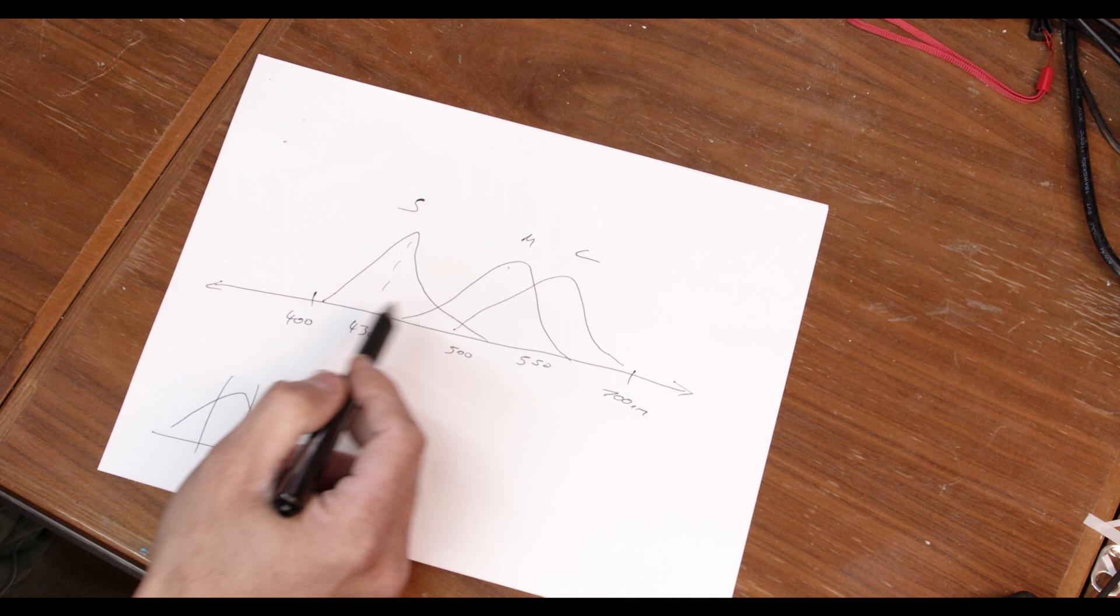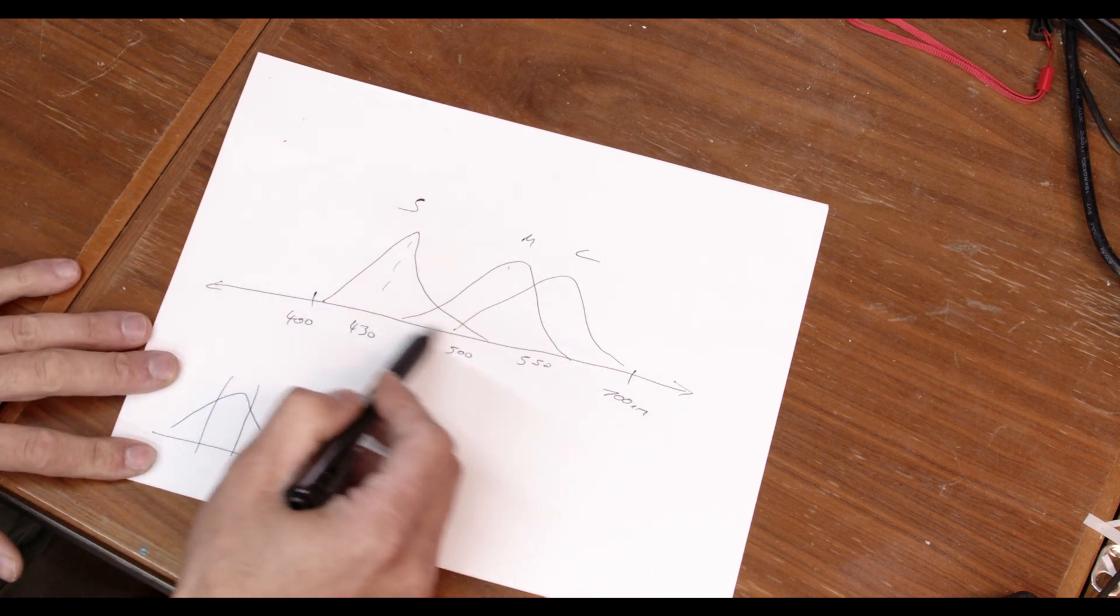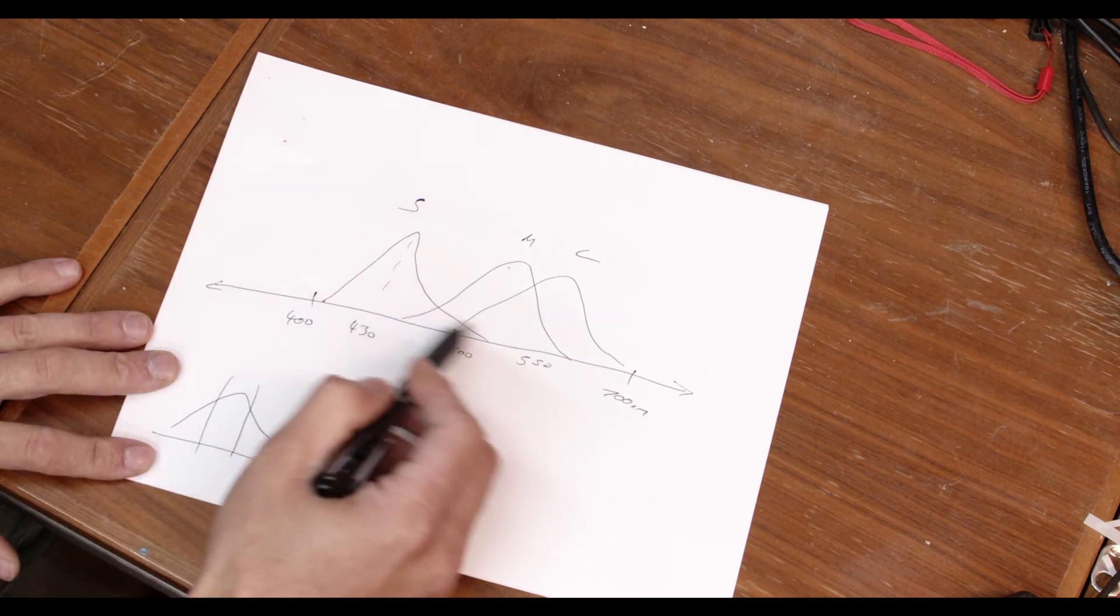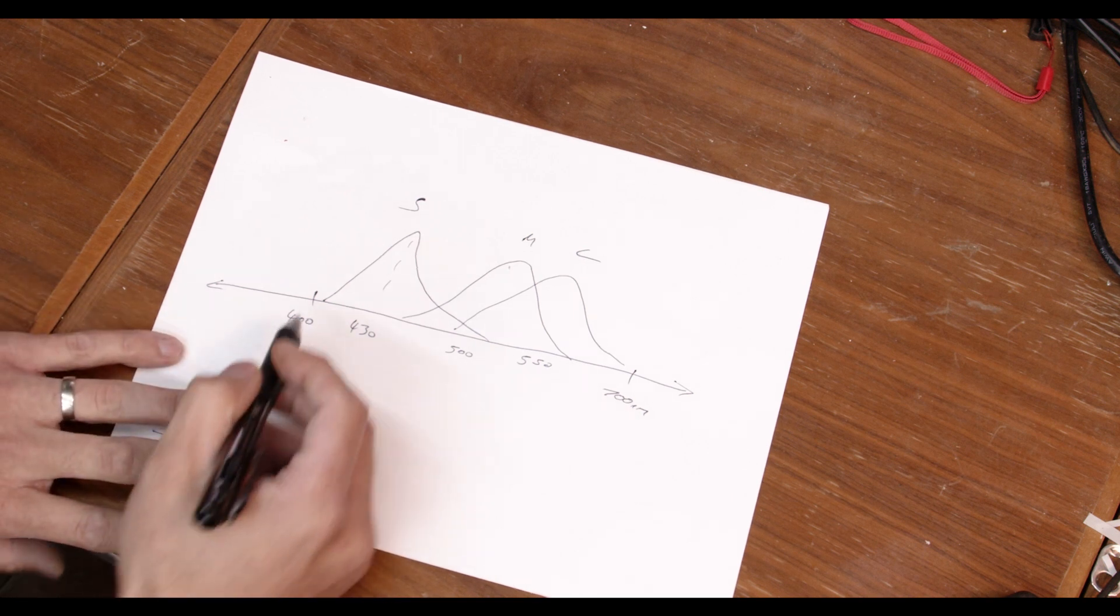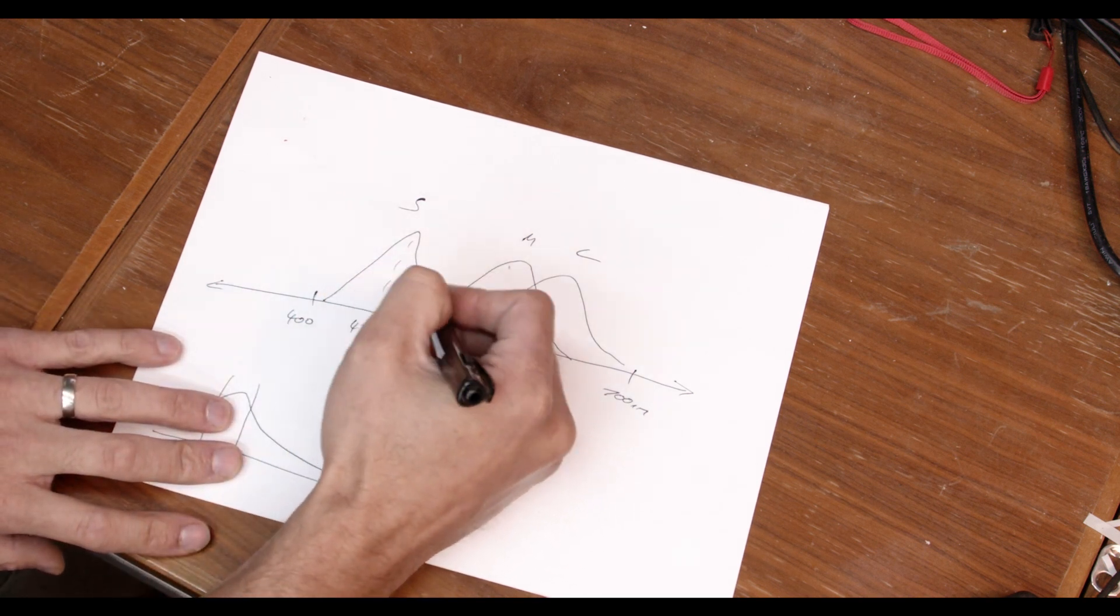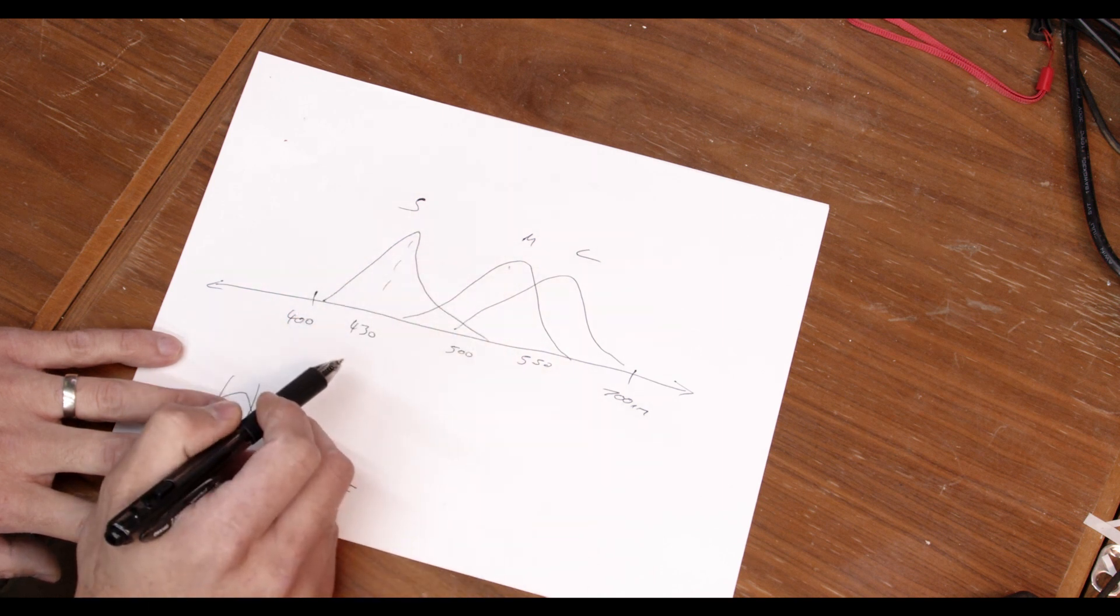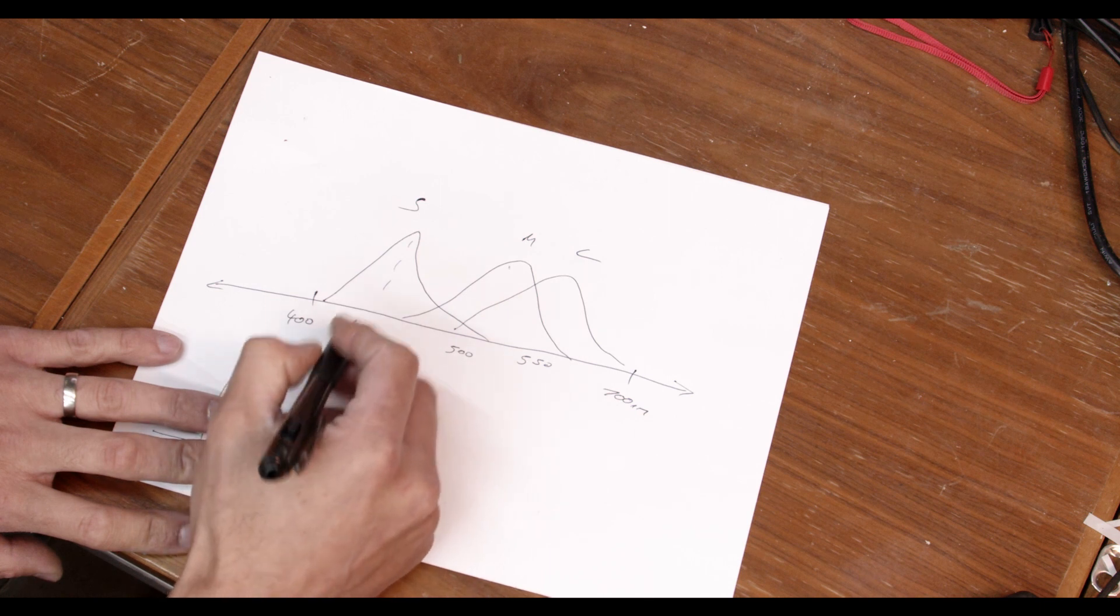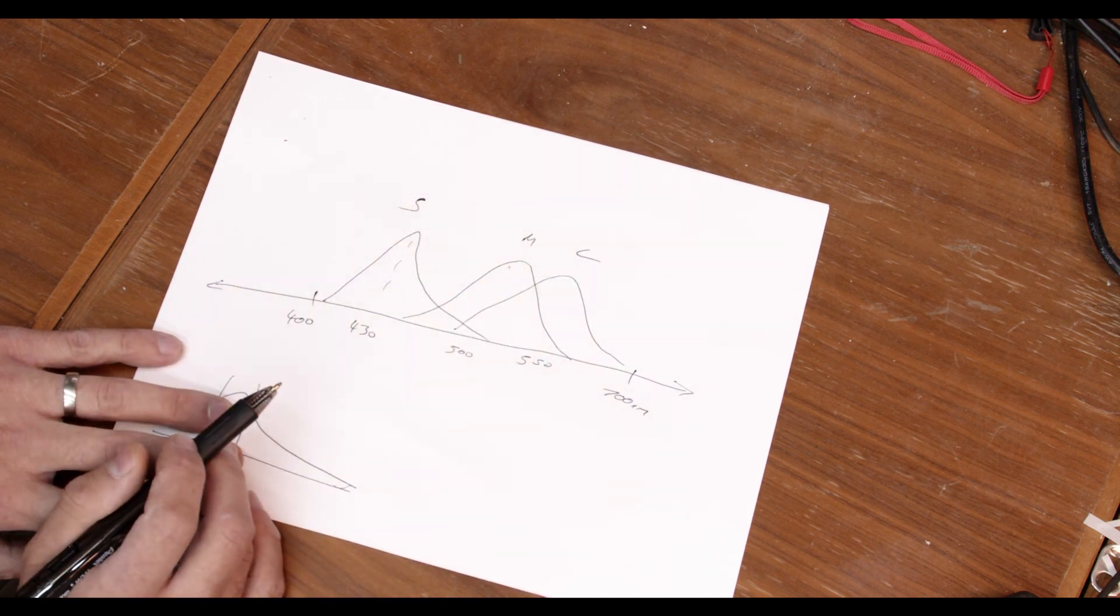Now, what these cone cells are doing is that any light that falls within their range of sensitivity basically gets integrated by this as a weight, a sensitivity weight. So, if you take the sum of all the light falling in this area and multiply it by the cone's sensitivity to those different frequencies, you'll get the response coming out of the short cone cells, likewise for the medium and long cone cells in the eye.